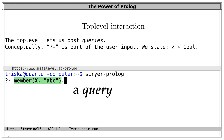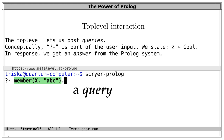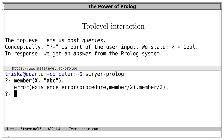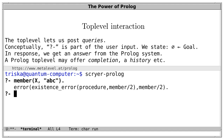That's why we call the input a query. The standard defines a query as a goal given as interactive input to the top level. In response, we get an answer from the system. For instance, when we post a query, we get an existence error because the predicate member is nowhere defined. A top level may of course offer many features that make the interaction more convenient, such as completion, history, shortcuts, and so on.